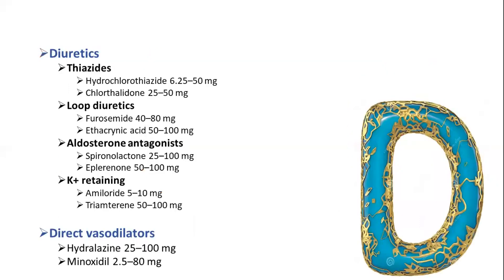D stands for diuretics, which includes various groups: thiazide diuretics, loop diuretics, aldosterone antagonists, and potassium-retaining diuretics. Diuretics can also be used in cases of chronic renal failure, heart failure, and primary aldosteronism.